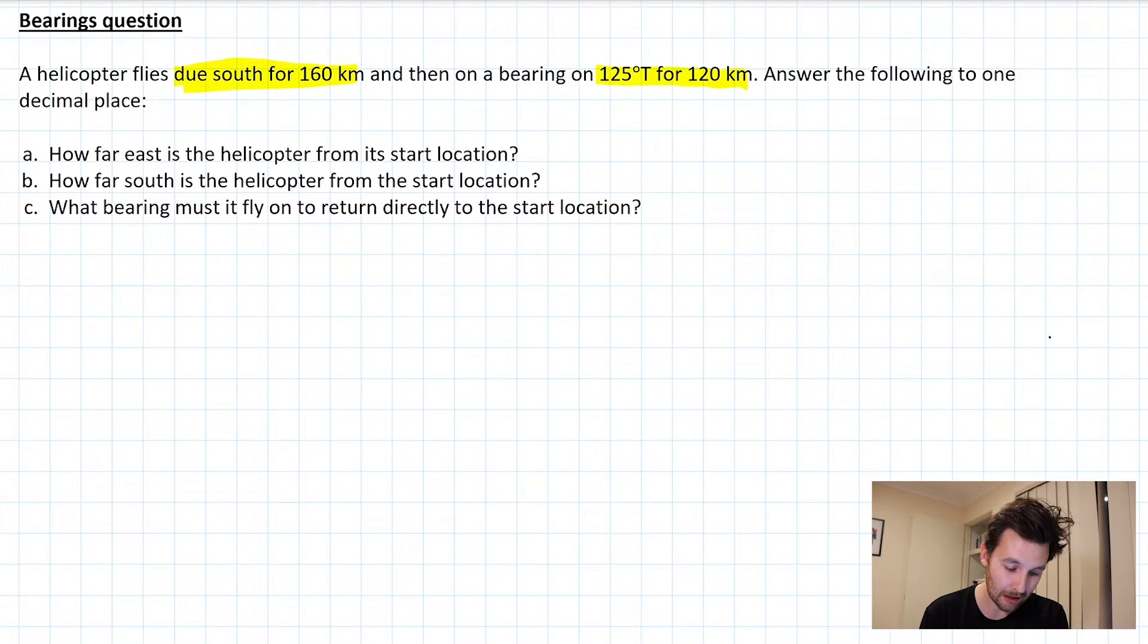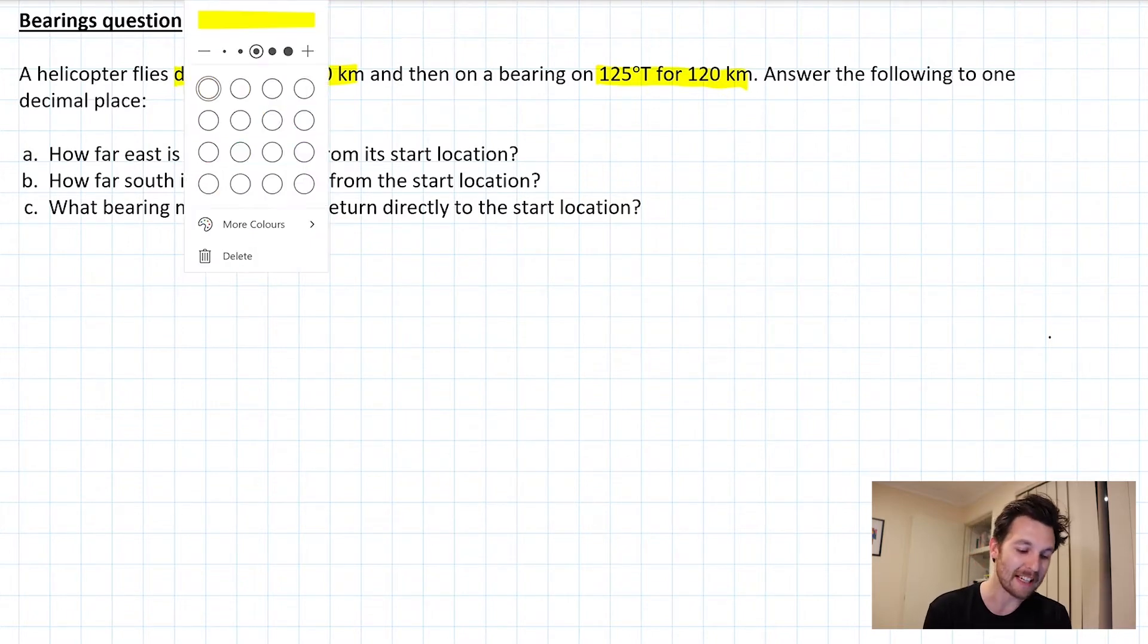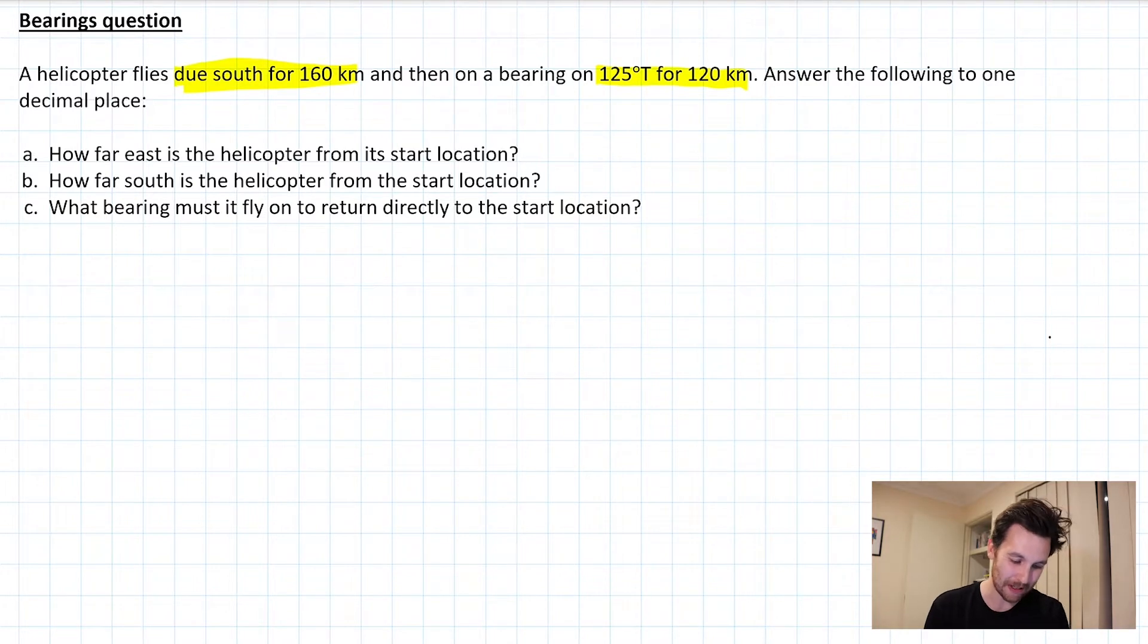So A and B aren't too bad. C is where it gets a little bit tricky and very bearing-y, if that is a word. Okay, so just like we always do, I'm going to start off by doing a quick sketch to represent the situation and help me make sense of it.